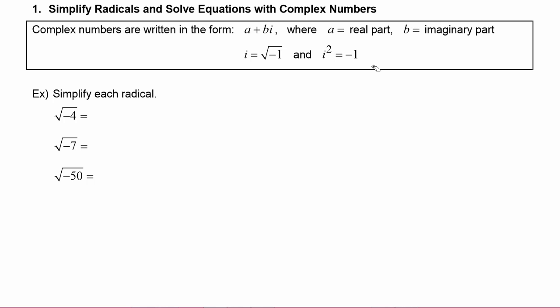So let's see how this works. In this first example we will simplify each radical. The square root of negative four — we can think of it as radical four times radical negative one. We know that radical four reduces to two, and the square root of negative one gets replaced with i.